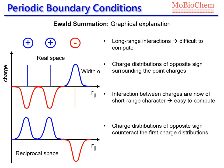In the last step, we need to remove this charge distribution which is not realistic. We only introduced this charge distribution to make the Coulombic interactions short-range interactions. Now we need to undo this operation and we introduce the same charge distribution but with opposite signs. Here we have a charge distribution which is negative, which will be countered by the charge distribution which is positive. These two distributions cancel the effect of the other two distributions.